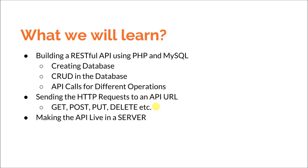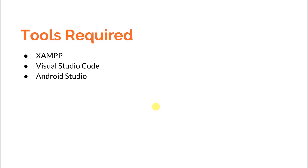For doing all these things we need some tools. For developing the API locally, I will use XAMPP server. XAMPP is for all platforms, but you can also use WAMP, LAMP, or whatever you want. As the code editor, I will use Visual Studio Code for the API part — again, you can use whatever editor you want. It is not necessary that you have to use Visual Studio Code, but it is good and you can use it.